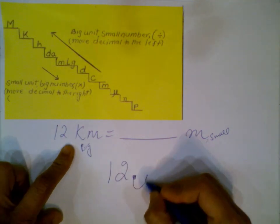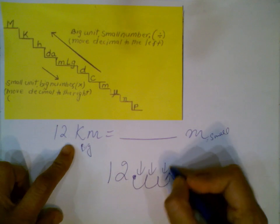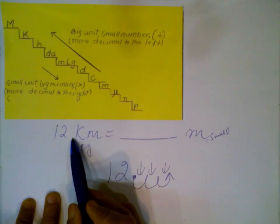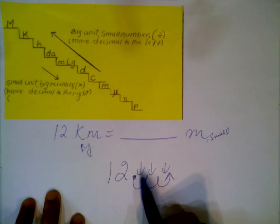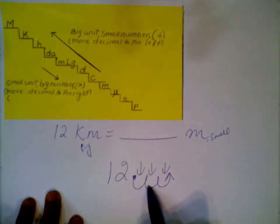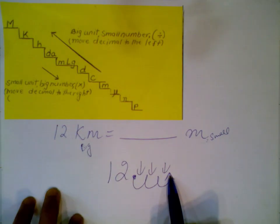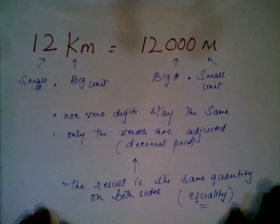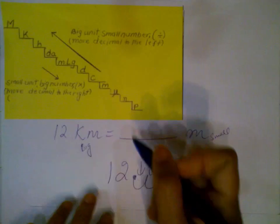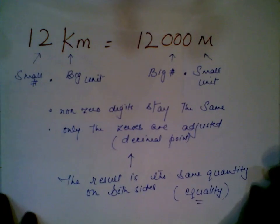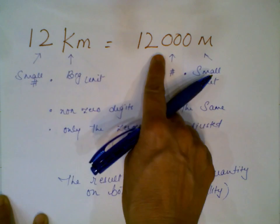Moving the decimal three places to the right: one, two, three. When you have a whole number with no visible decimal point, just assume it's at the end. Moving three places to the right is the same as multiplying by 1000 — ten times ten times ten. So 12 kilometers equals 12,000 meters.